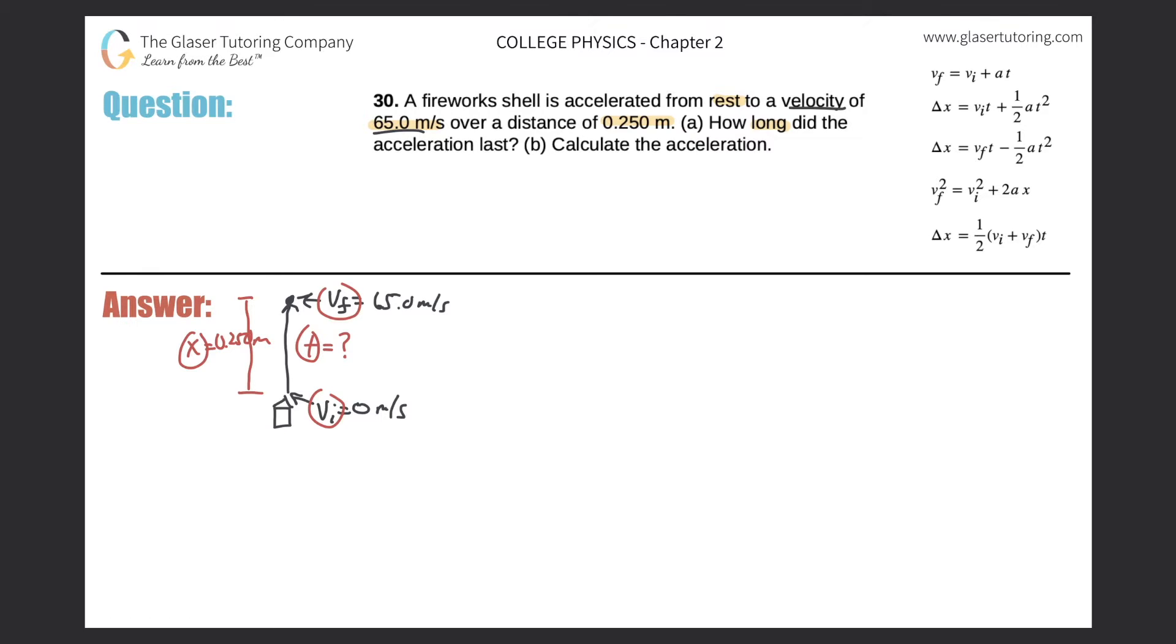And if we go over to the right-hand side, it looks like the last equation will suffice. So letter A, write down change in displacement is equal to one-half times the initial velocity plus the final velocity multiplied by time.